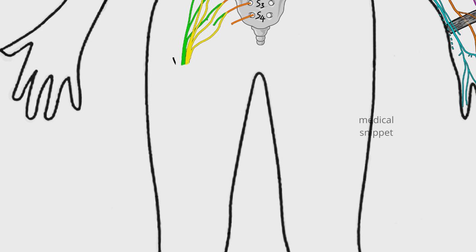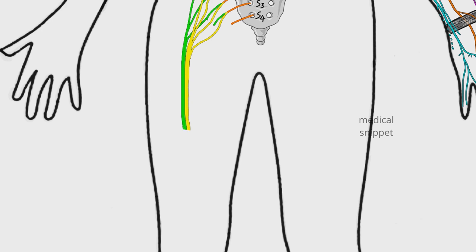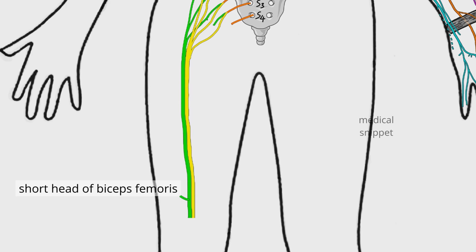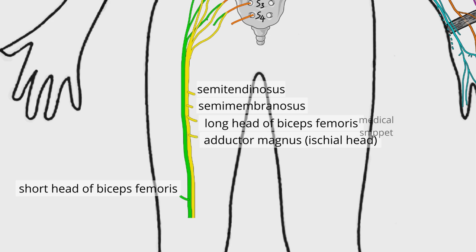The nerve exits the pelvic cavity via the greater sciatic foramen, then passes down along the back of the thigh to the popliteal fossa. The sciatic nerve has no cutaneous supply in the thigh. In the thigh, it supplies all the muscles of the posterior compartment. The common peroneal part supplies only the short head of biceps femoris, while the tibial portion supplies semitendinosus, semimembranosus, the long head of biceps femoris, and the ischial head of adductor magnus.